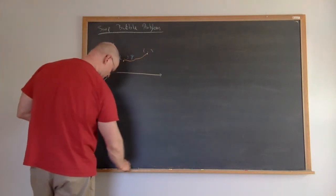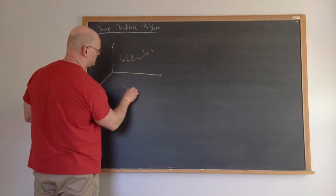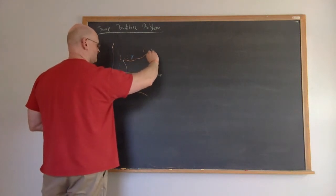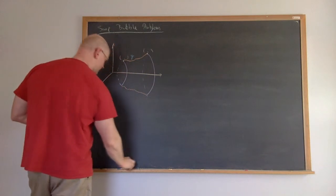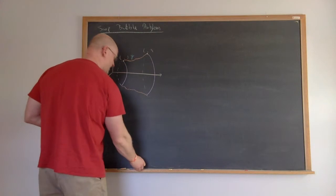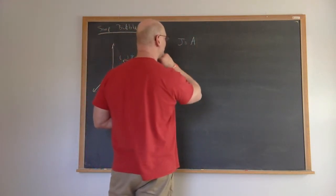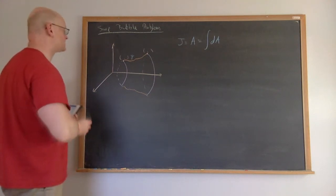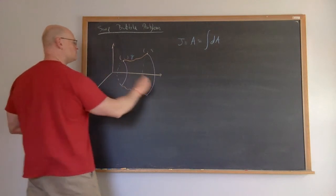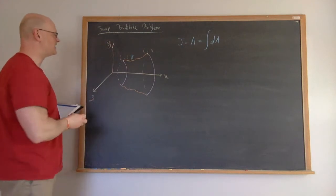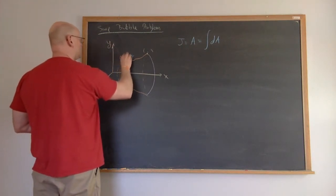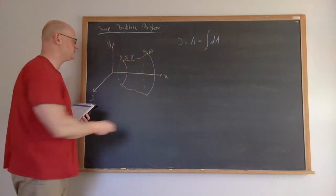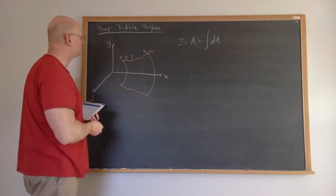We're going to take the same path and rotate it about a particular axis. Let's put in a coordinate system: we'll rotate about the x-axis, call this the y-axis, and the z-axis, so that we have endpoints x1, y1 and x2, y2. Our endpoints are fixed, and we move from x1, y1 to x2, y2, rotating around the x-axis to generate the surface area.